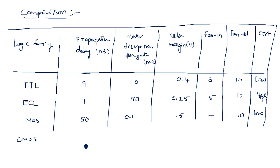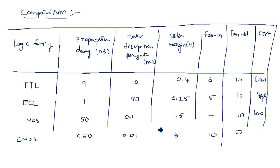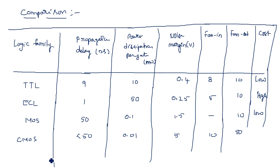The CMOS logic family has a propagation delay of less than 50 nanoseconds and power dissipation of only 0.01 milliwatts — very low. Noise margin is about 5 volts, and fan-out is 50. The propagation delay being less than 50 nanoseconds means it is slow compared to TTL, but power dissipation is extremely low.